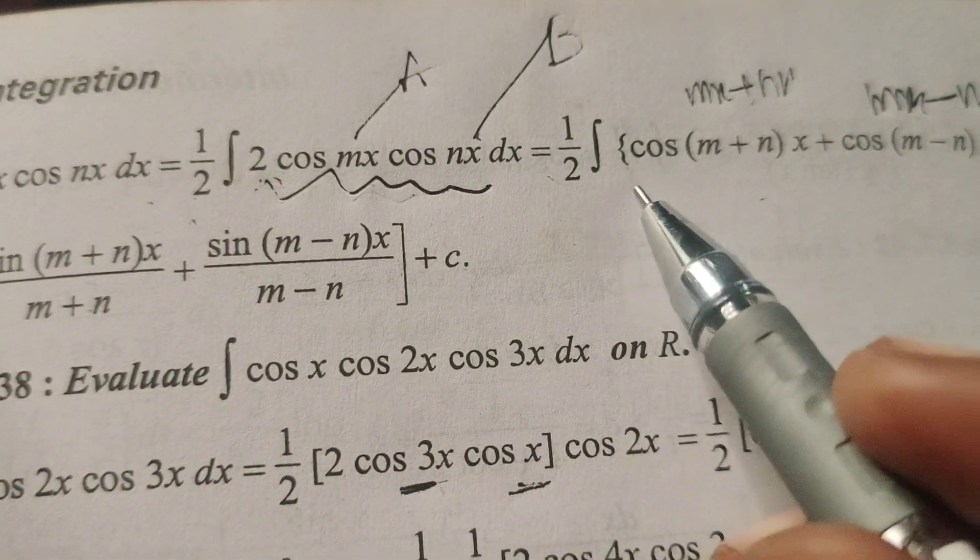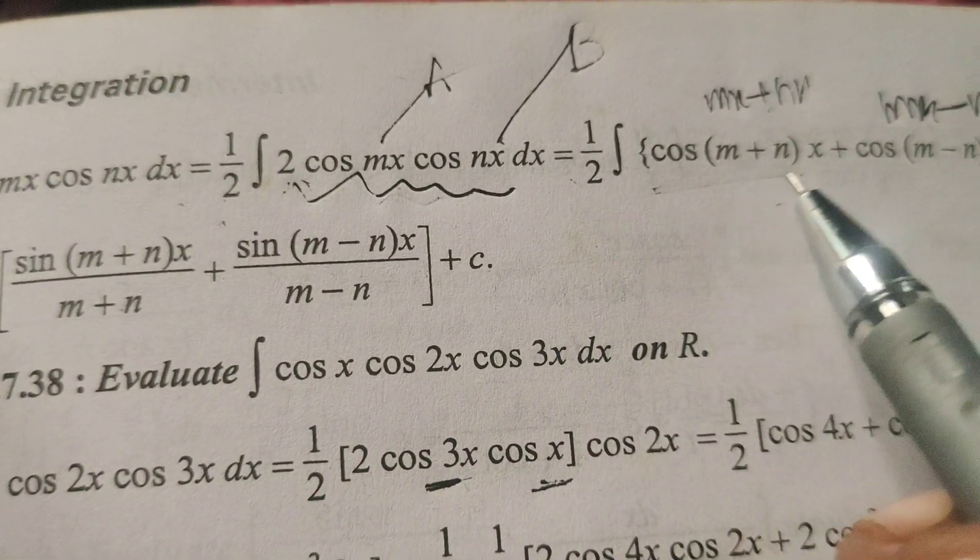Here x is the common factor. Therefore 1 by 2 into, now integrating this cos of m plus n into x.